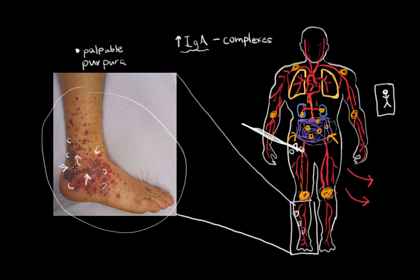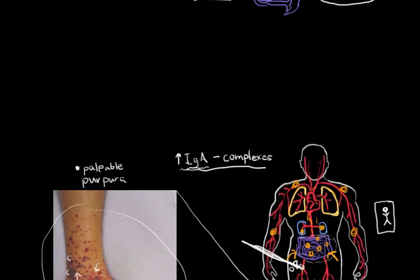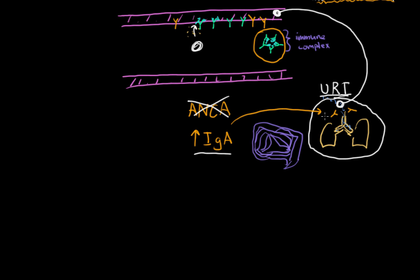If you see these classic symptoms in a child — though teens and adults can also be affected — you need to treat with steroids. Steroids inhibit the immune system from causing further damage to blood vessels. With time, this disease should actually go away. It's a very self-limiting process, since it was caused by an upper respiratory infection — the trachea, the throat, and so on. Once you treat, this illness should go away.